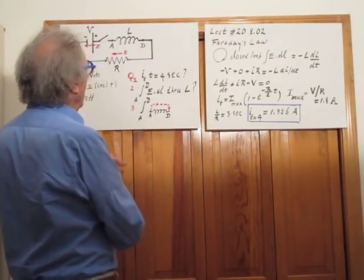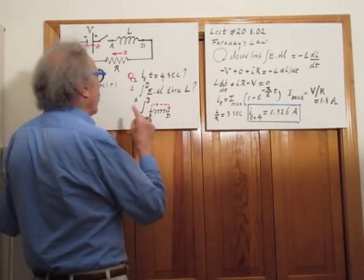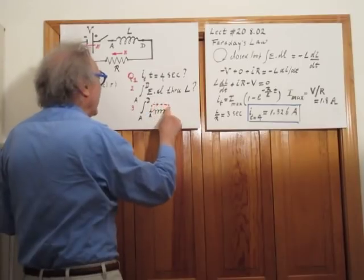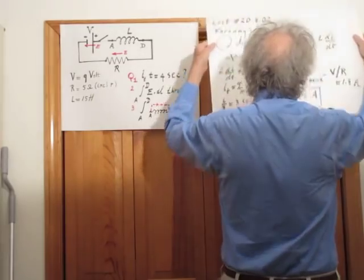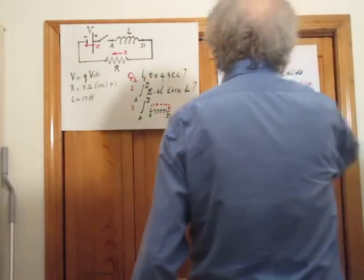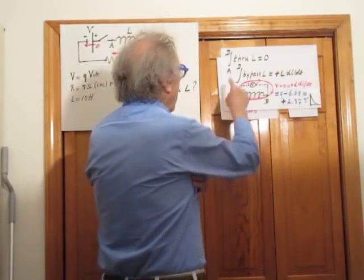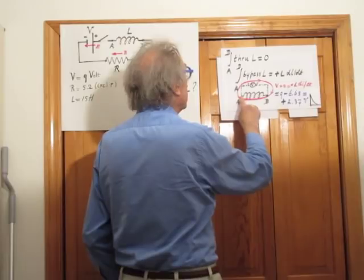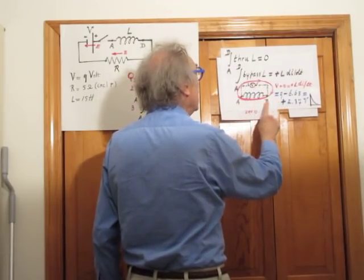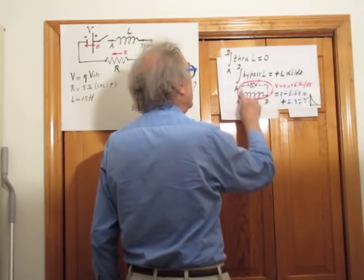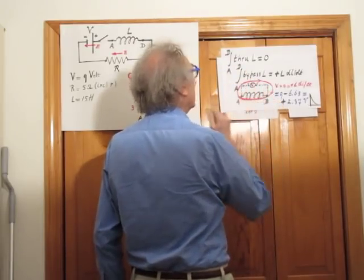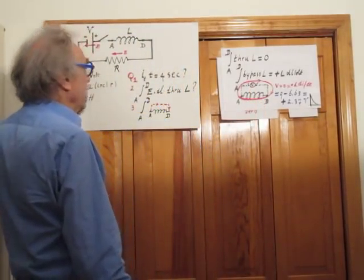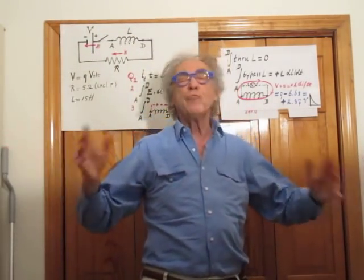Now the interesting part: what is the integral of E dot dl going from A to D not through the wire, but outside the wire? I bypass the inductor and come back. For practical purposes, in this outside bypass curve I have placed a voltmeter — don't confuse this V with the battery voltage V. This voltmeter V stands for voltmeter and has a resistance of hundreds of megaohms.